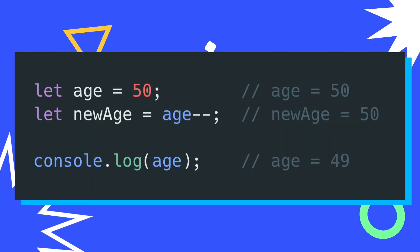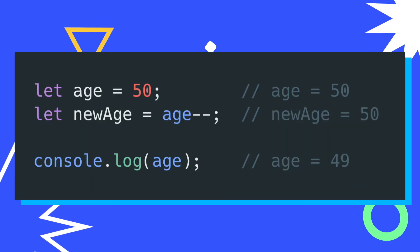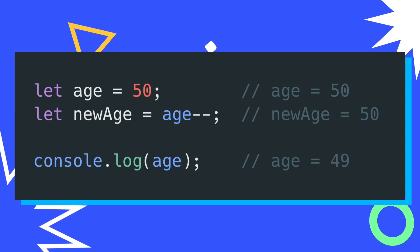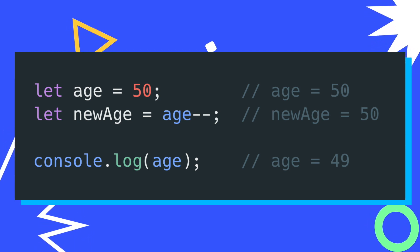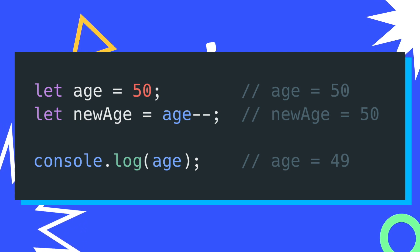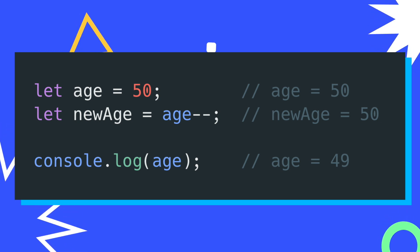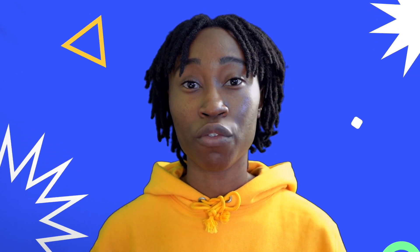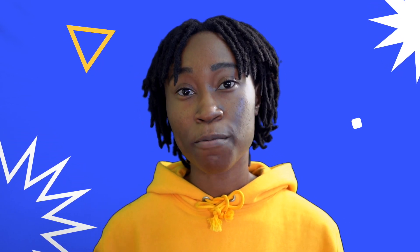This also happens when we apply the decrement operator after a value. Again, we can see that new age is still assigned to 50, while age will decrease to 49 after the decrement operator has been fully applied. This might not feel the most natural, especially if you're expecting your value to be incremented or decremented before it gets assigned to another variable. So this issue is addressed with the process of prepending or prefixing these operators.